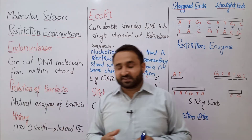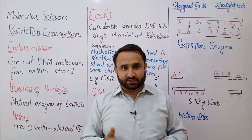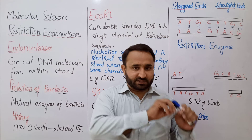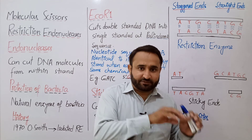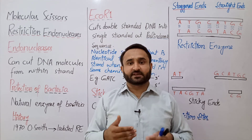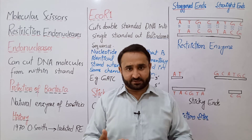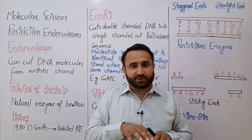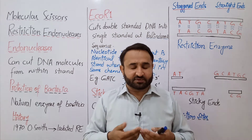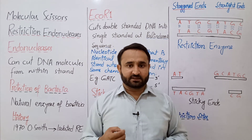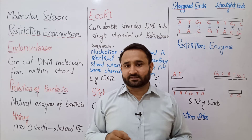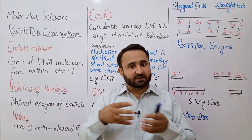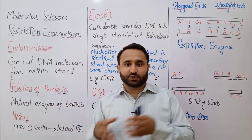Restriction endonucleases exist for the protection of bacteria. Basically, there are three types of viruses: animal viruses, plant viruses, and bacteriophages. Bacteriophages are viruses which infect bacteria. To protect themselves from bacteriophages, bacteria naturally synthesize certain enzymes within their body.